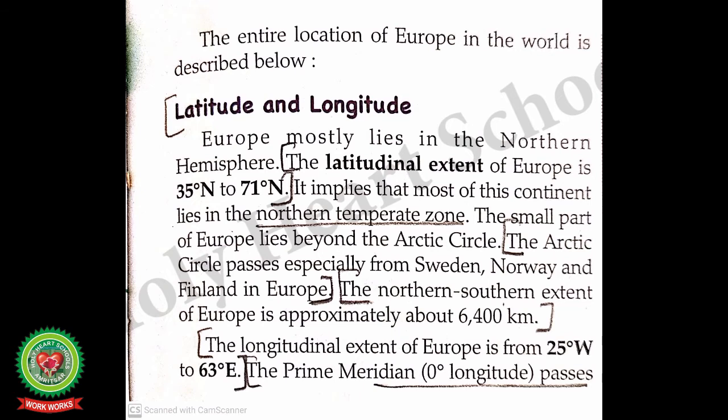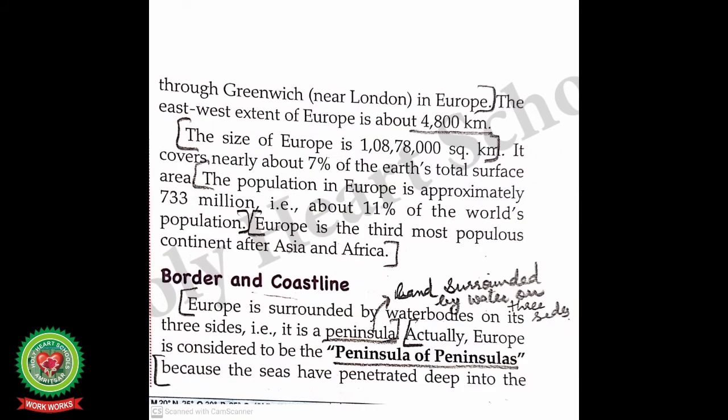The north-south extent of Europe is approximately 6,400 kilometers. The longitudinal extent of Europe is from 25 degrees west to 63 degrees east. The prime meridian — zero degree longitude — passes through Greenwich, near London in Europe. The prime meridian divides the earth into two equal halves.